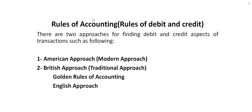Bismillahirrahmanirrahim. In the previous slide we discussed about the double entry system, and we said the receiving aspect is called debit and the giving aspect is called credit. In this topic we want to explain how we can identify the debit as well as the credit — this is called the rules of accounting, also called rules of debit and credit. There are basically two approaches to identify whether an account becomes debit or credit.